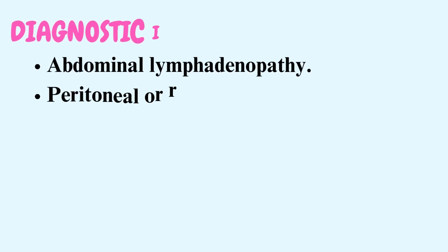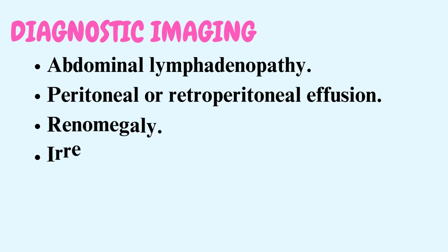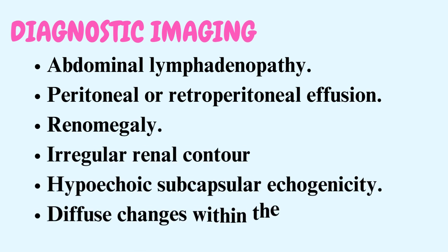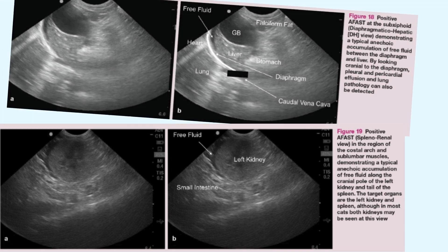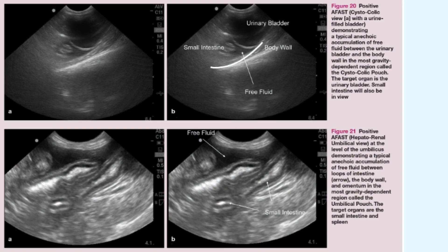Diagnostic imaging: Ultrasonographic findings in FIP may include abdominal lymphadenopathy, peritoneal or retroperitoneal effusion, renomegaly, irregular renal contour, hypoechoic subcapsular echogenicity, and diffuse changes within the intestines.